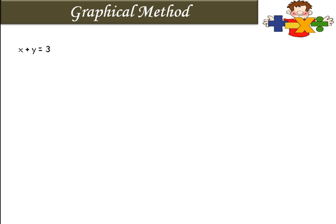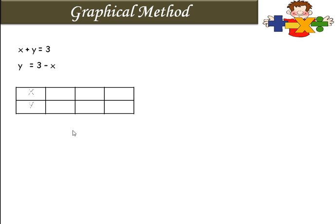Now let us look at the graphical method. Look at the first linear equation: x plus y is equal to 3. To represent it on a graph, we shift x to the other side: y is equal to 3 minus x. Let us prepare a table. Write x and y, and use the fixed values minus 1, 0, and 1.